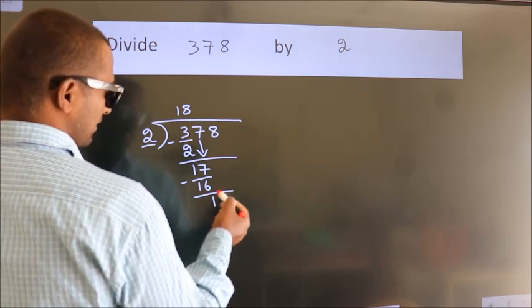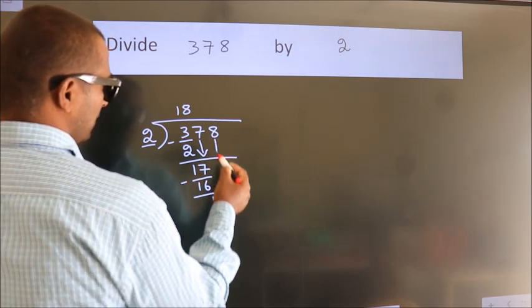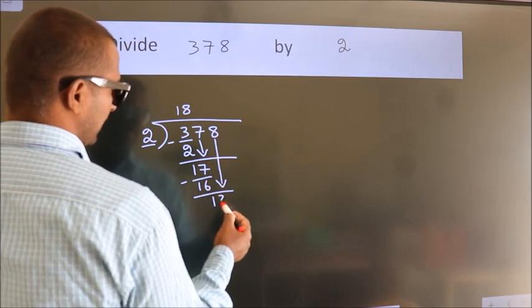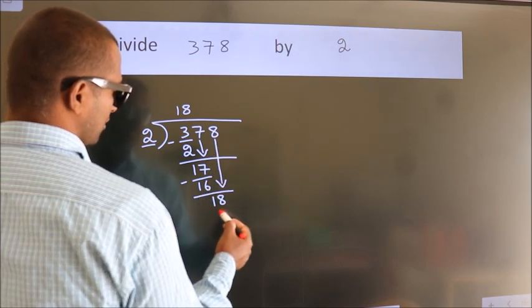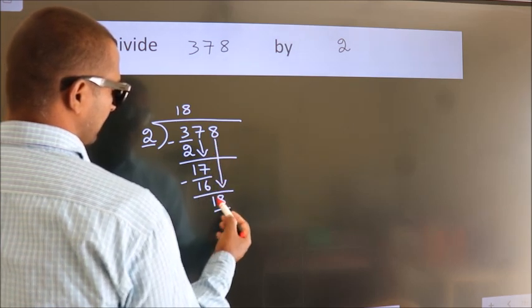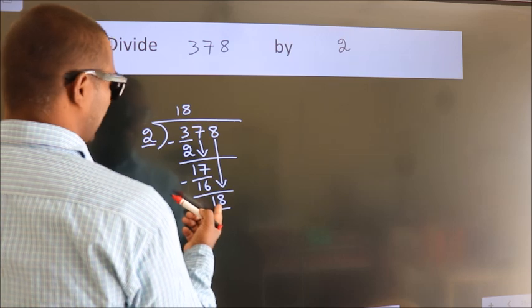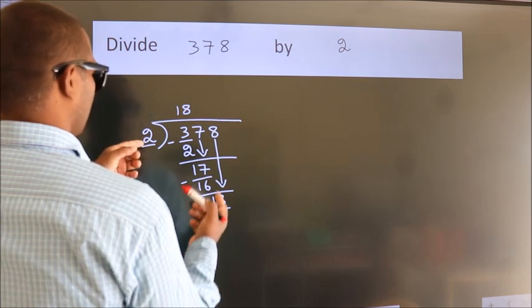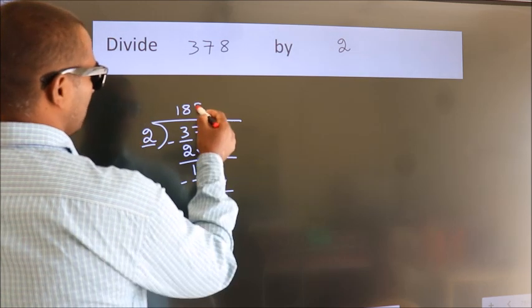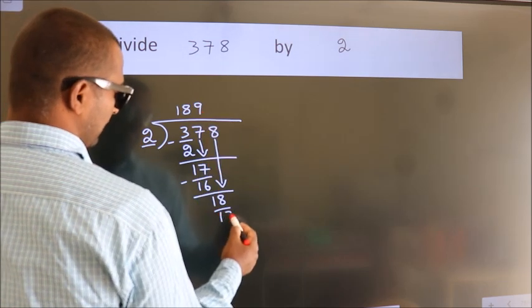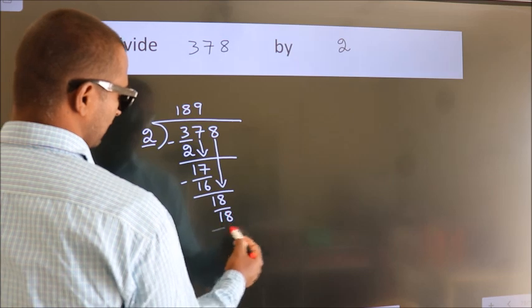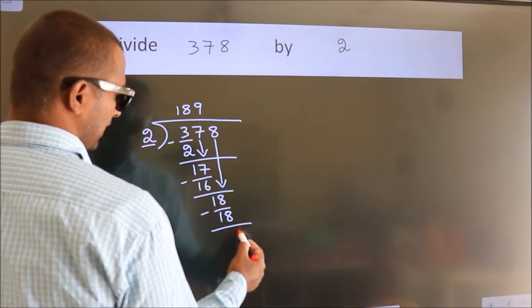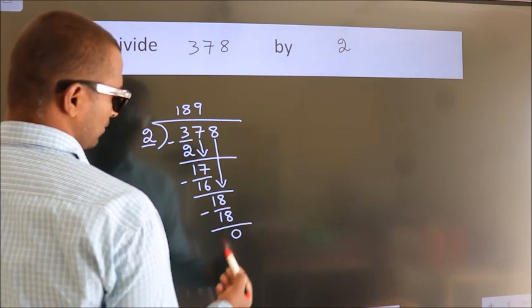After this, bring down the beside number. So 8 comes down, giving us 18. When do we get 18 in the 2 times table? 2 nines are 18. Now we subtract and we get 0.